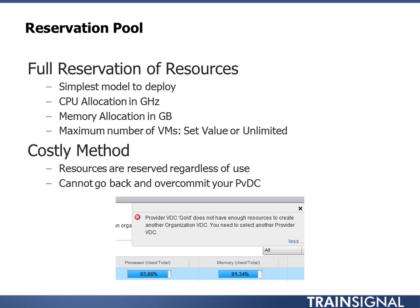The final allocation model is the reservation pool — the easiest to understand. All we do is ask how much CPU and memory, then reserve all of it — 100%, regardless of whether it's being used. It doesn't matter if you use it or not; it is reserved and guaranteed. This is the most costly method, but also the most predictable. If someone purchases a reservation pool of 100 GHz, you count that as 100 GHz used — you don't worry about it anymore. They'll never use more, and if they use less, you don't care because it's already reserved.